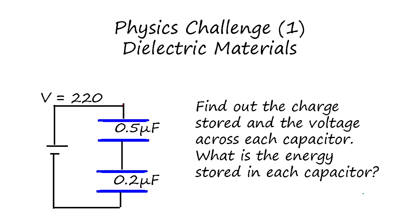Physics Challenge 1: Dielectric Materials. We have two capacitors in series and we apply the voltage. Let's see, capacitors C1 and C2, and the voltage across is V1 and V2. So we know the charge accumulated Q is the same as negative Q here.